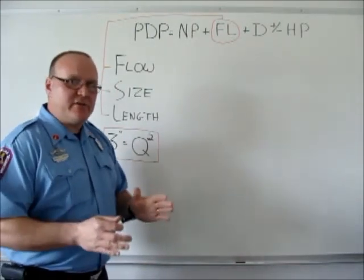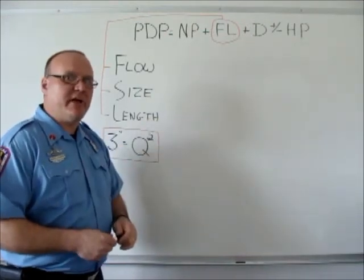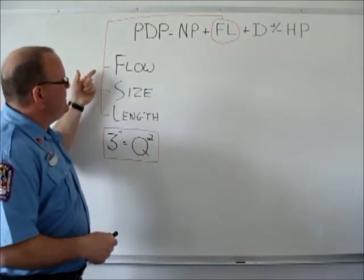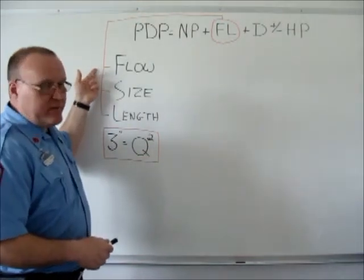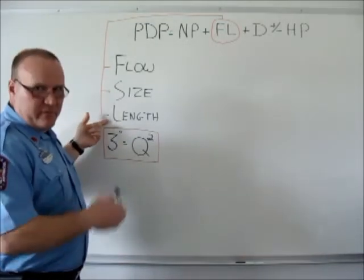Anytime we're calculating friction loss and not using a given number, such as the 30 pounds per 100 feet for an attack line, what we would have to identify are three things: the flow in gallons per minute, the size of the hose or the diameter, and then the length of the hose line.